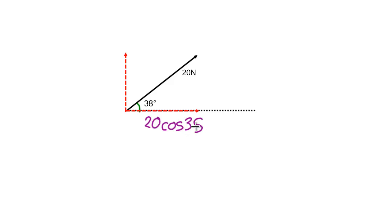The component of the vector not touching the angle, in this case the vertical component, is always calculated by multiplying the magnitude of the vector by the sine of the angle.